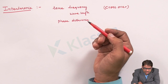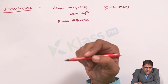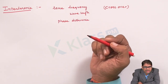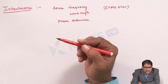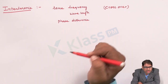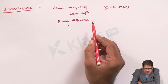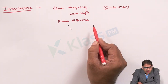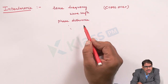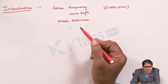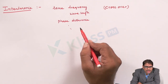For an interference pattern to take place in a particular medium, we take two waves that get superposed in a respective region to evolve different types of interference. To produce that, we require two sources — normally a point source, a narrow source, or an illuminated source.